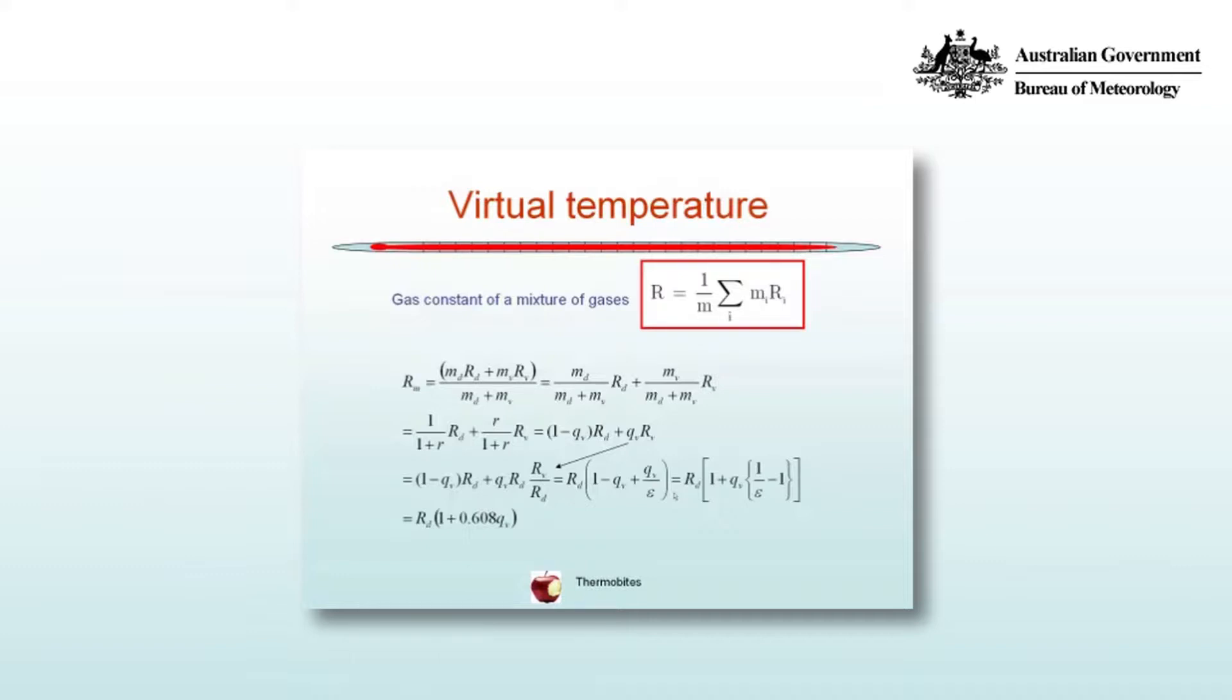Then you can break up the numerator into its two expressions. So if we want to simplify this, we're going to firstly get rid of all expressions relating to the mass. So we divide through by the mass of the dry air top and bottom.